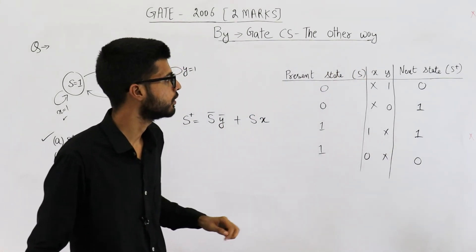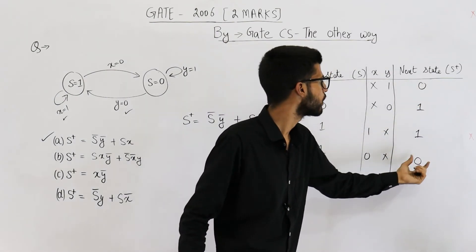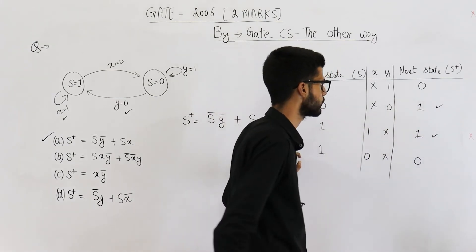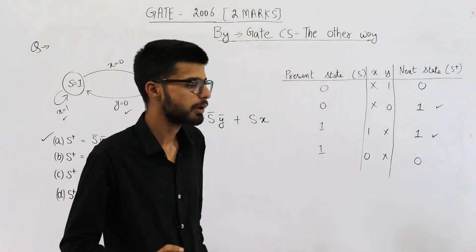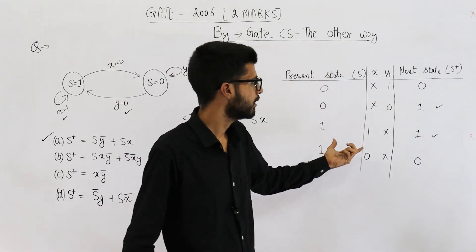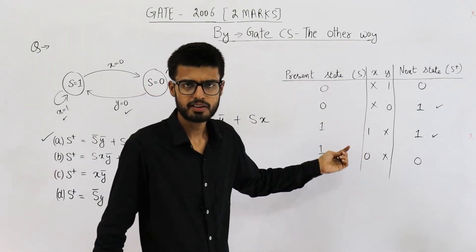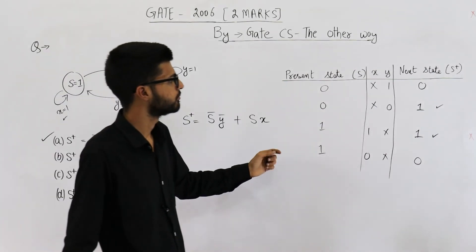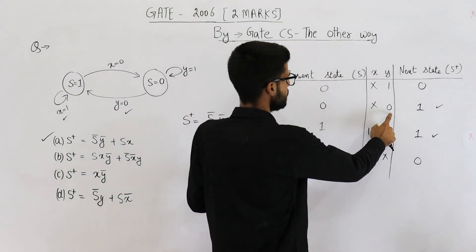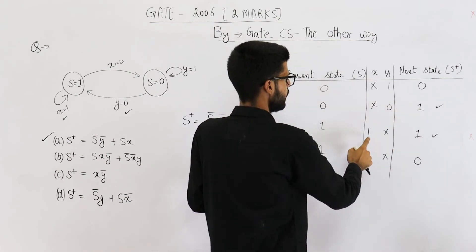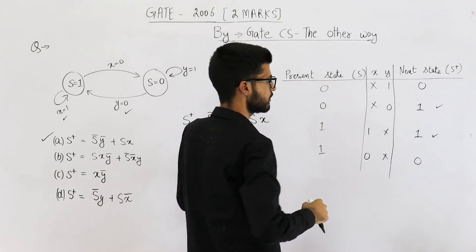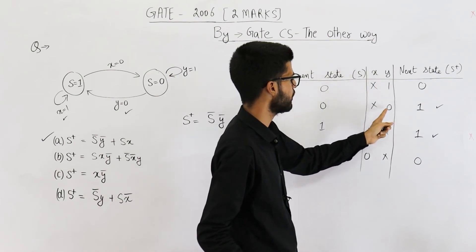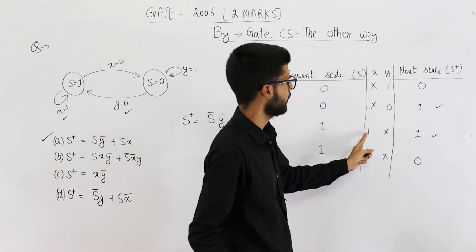Now we need to write down equation for this variable. You can see it is high at this place and this place. We can draw a K map also but I'll recommend not to go for K map in such cases when you have options and it's a very easy one. See 0 0 in this case we have 1 and in 1 1 this case we have 1. So it is s bar y bar s x.